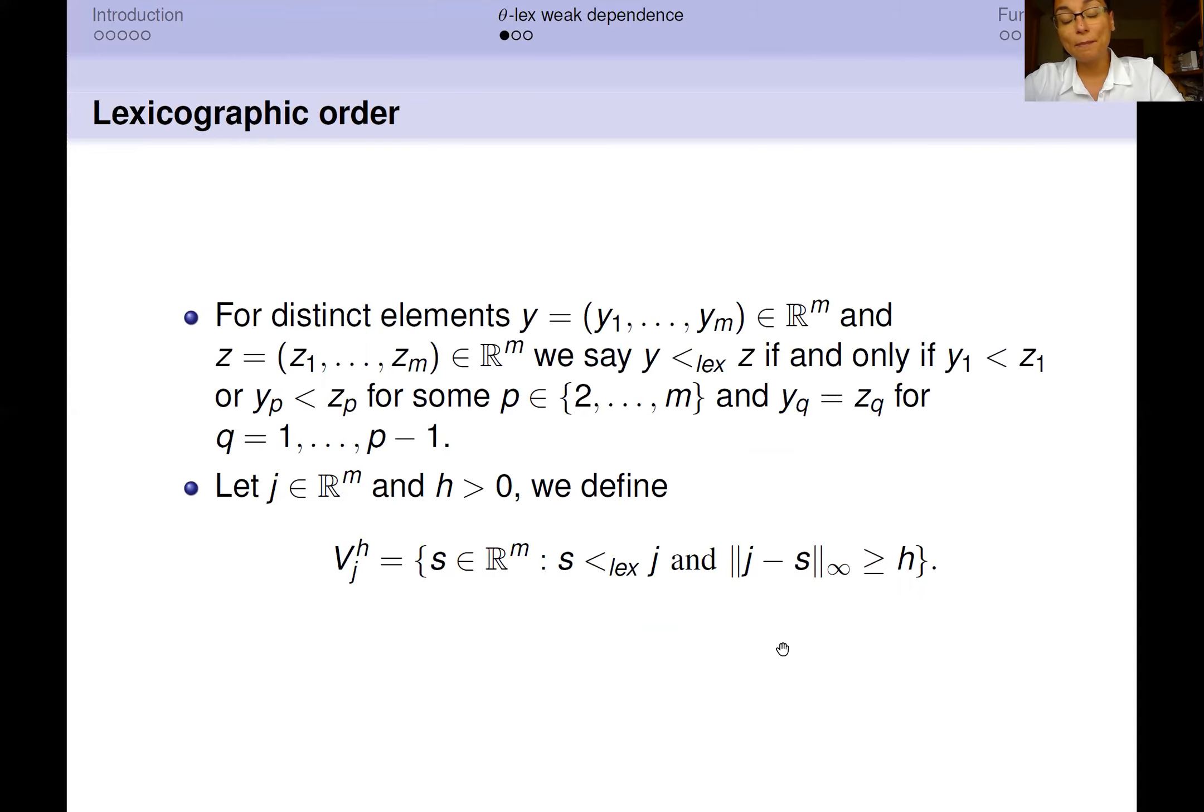Let us give a look at this dependence notion then. In order to introduce θ-lex weak dependence, I have first to introduce you the lexicographic order. So let us consider two elements in ℝ^M, we call them y and z. We say that y is lexicographically less than z if and only if